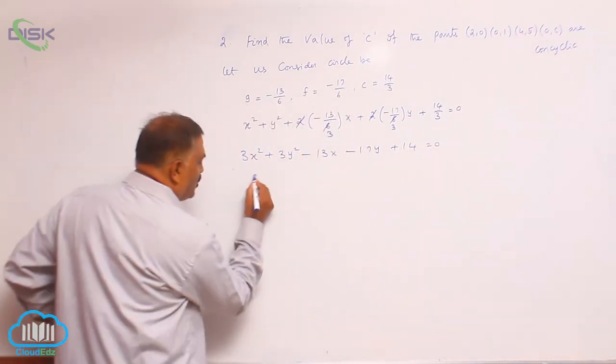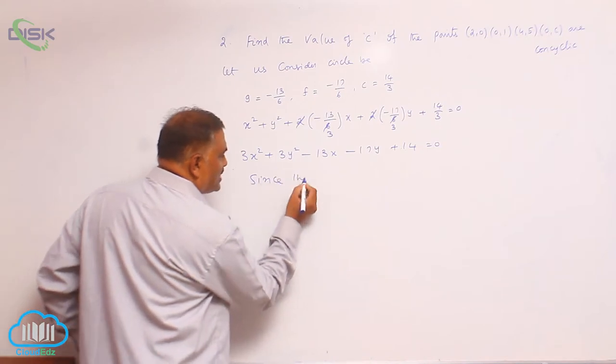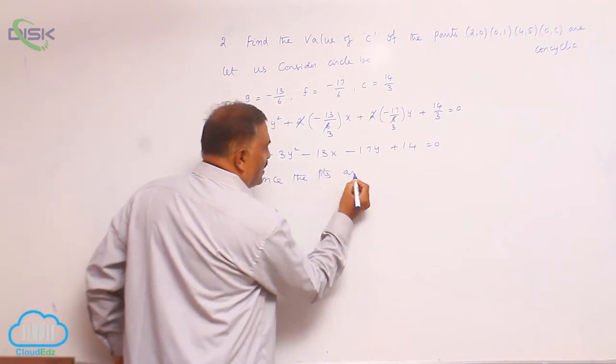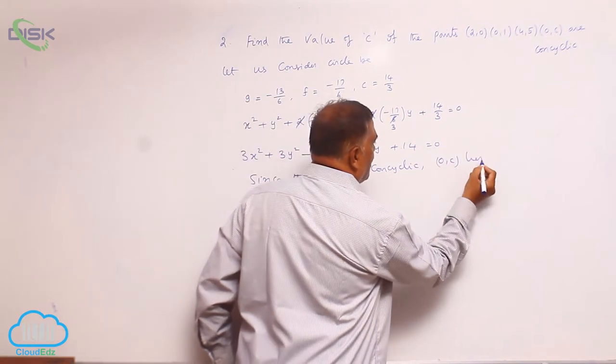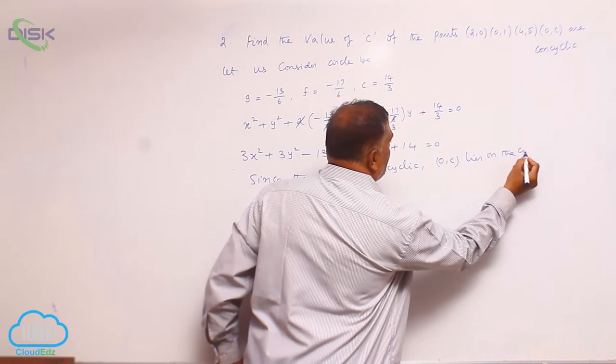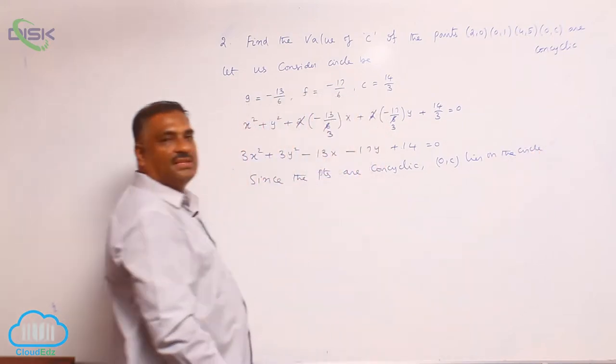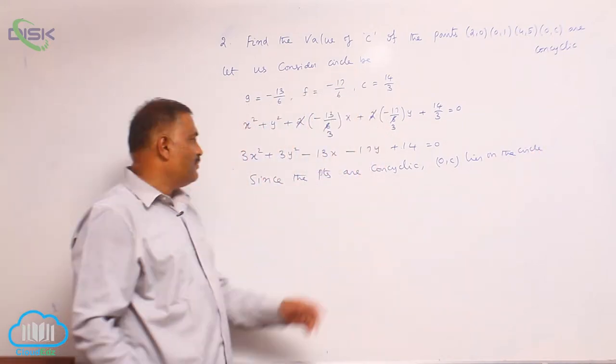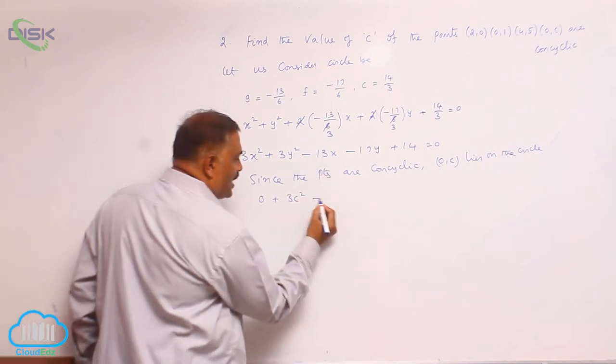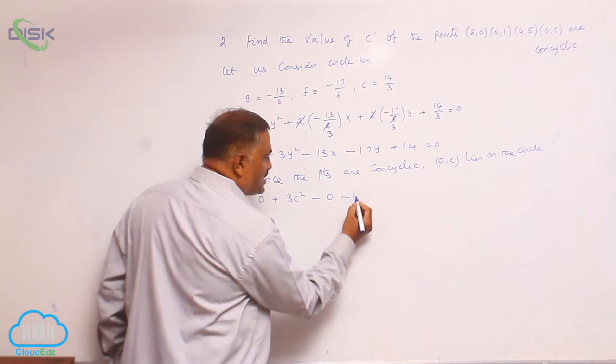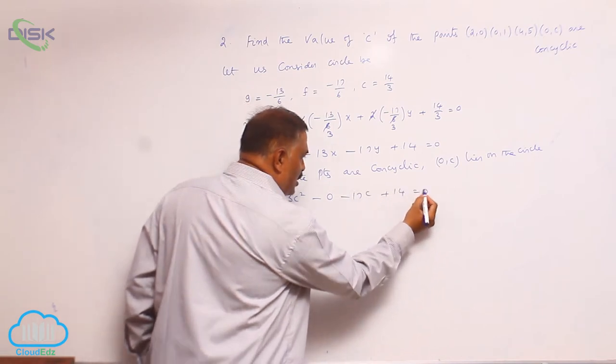Since the points are concyclic, 0 comma c lies on the circle. Wherever x and y is there, let us substitute 0 comma c. This is 0, 3c square minus 0 minus 17c plus 14 equal to 0.